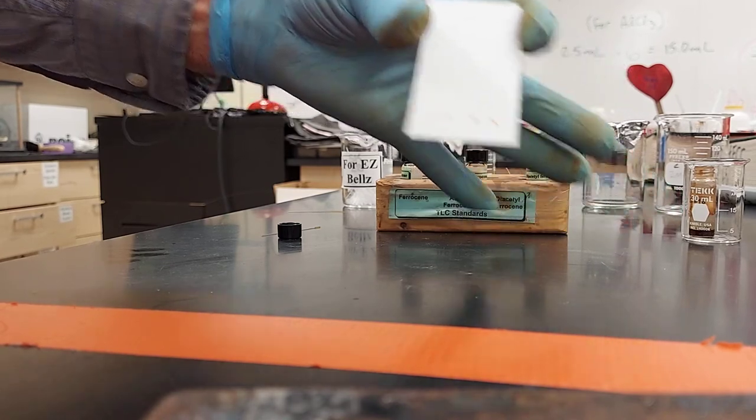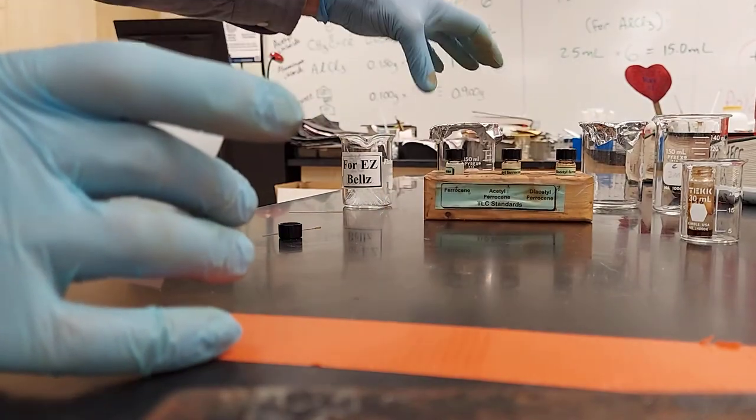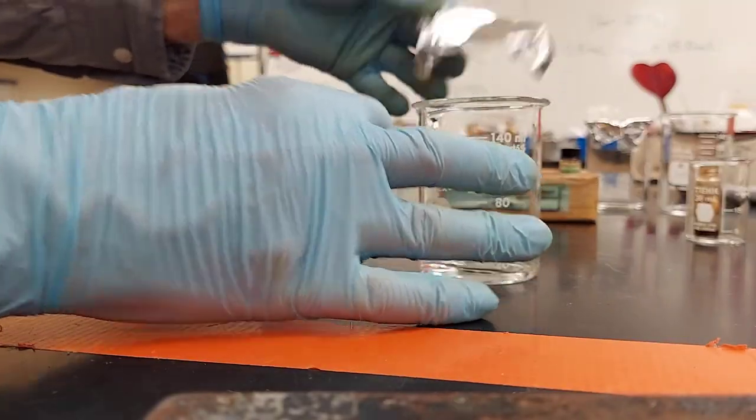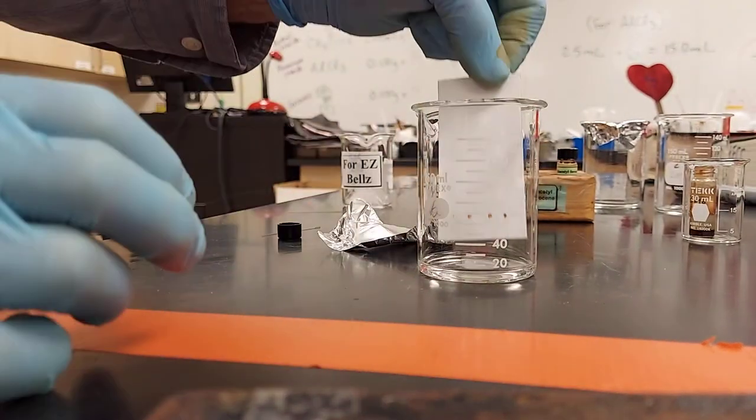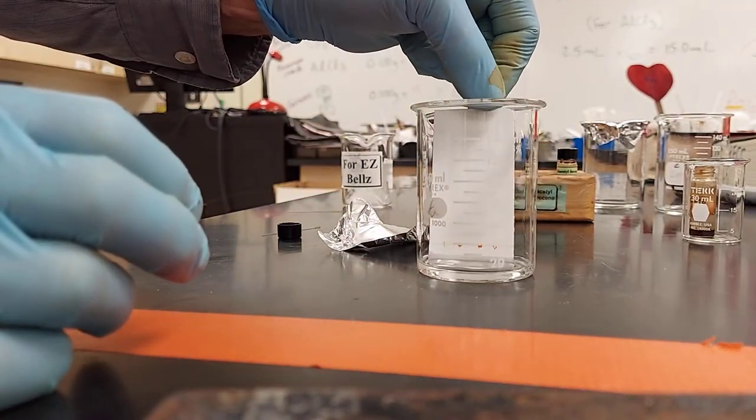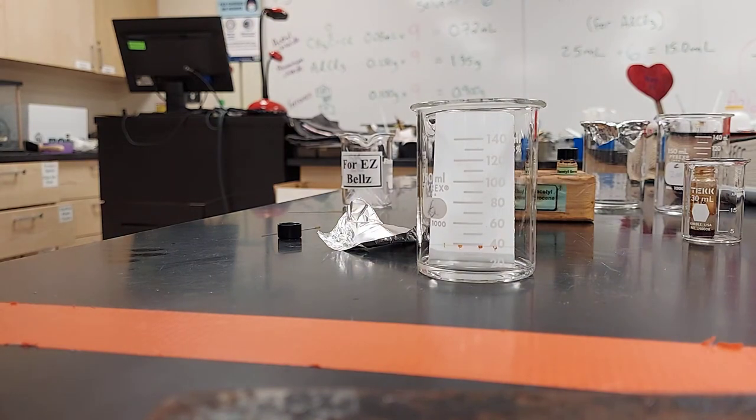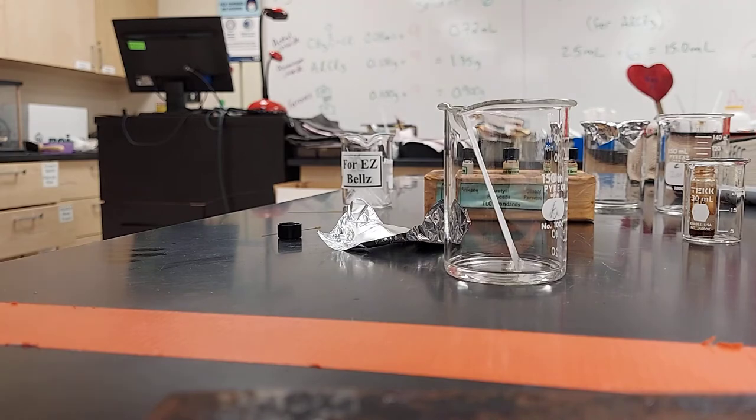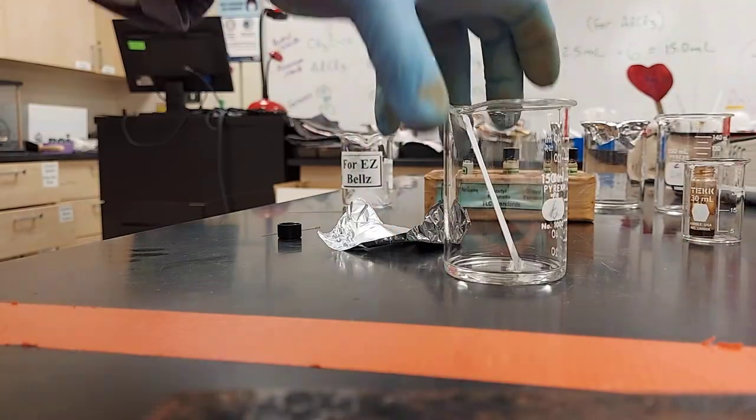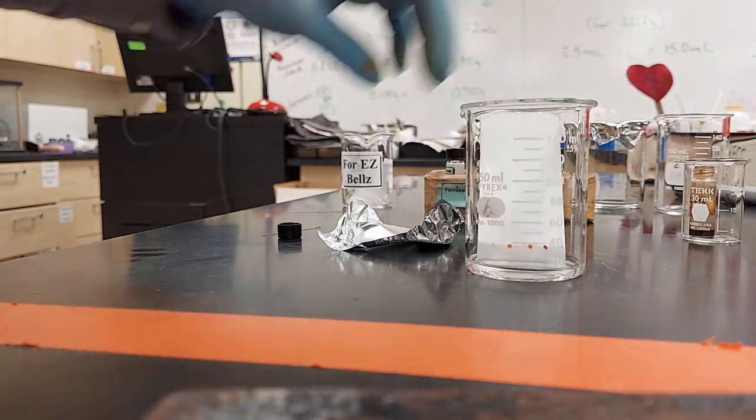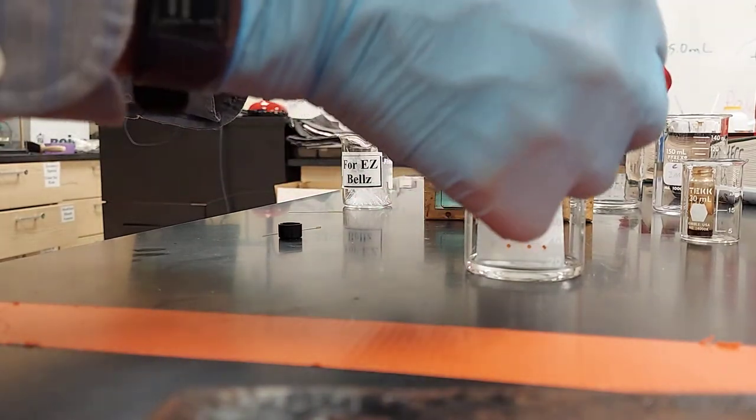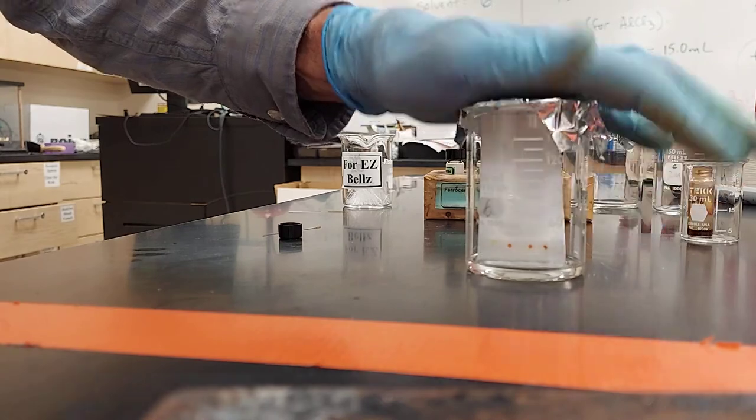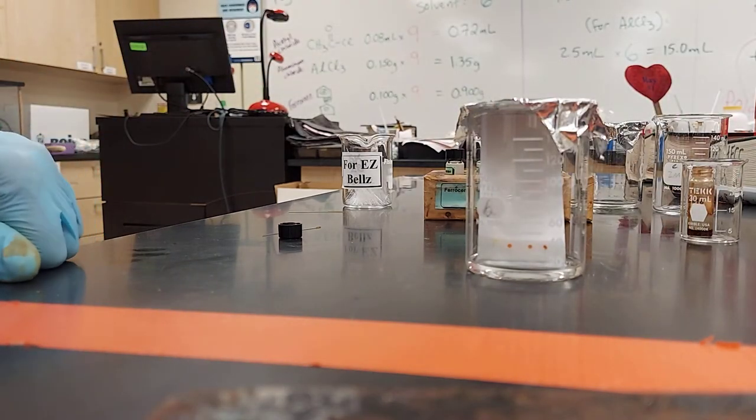So our five minutes are up. We're going to put our TLC plate in here. You want to lean it in there, not on too severe an angle. See how it's not all the way across the beaker? Slight angle. And put the lid on. Make sure it's snug by using your whole palm.